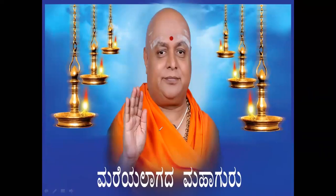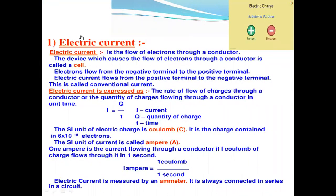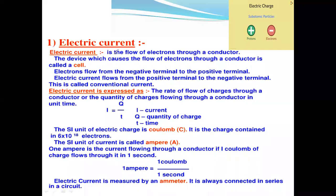In this class we're going to start with the electricity lessons of the 10th standard CBSE syllabus. Electric current is the flow of electrons through a conductor. The device which causes the flow of electrons through a conductor is called a cell.